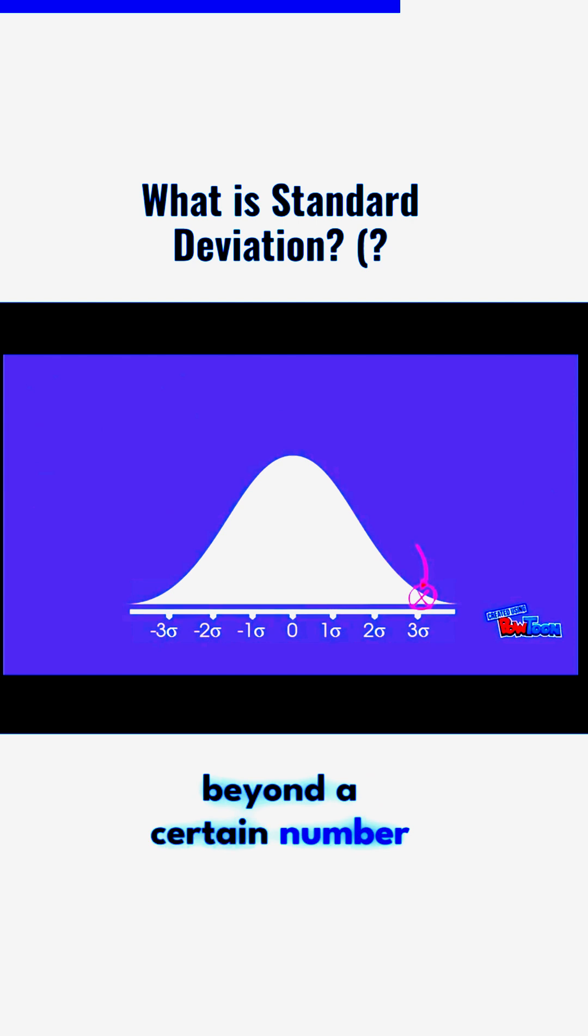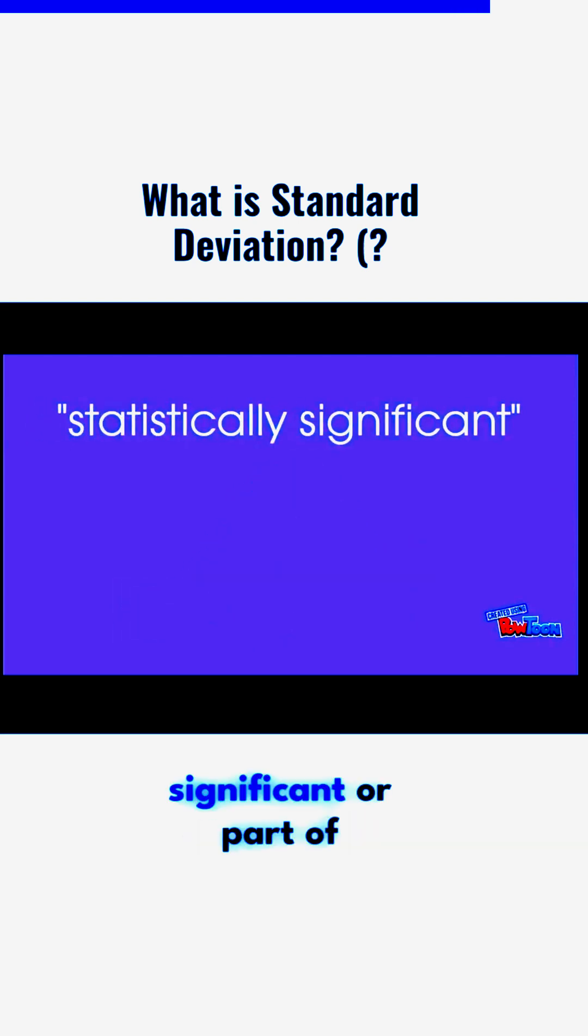A data point that is beyond a certain number of standard deviations from the mean represents an outcome that is significantly above or below the average. This can be used to determine whether a result is statistically significant or part of expected variation.